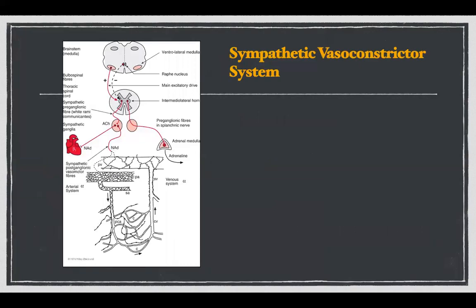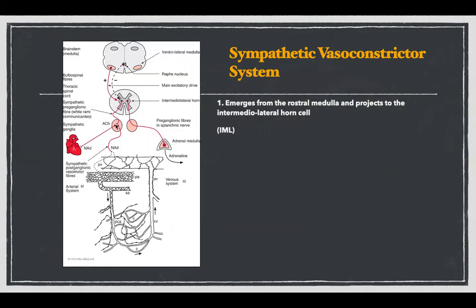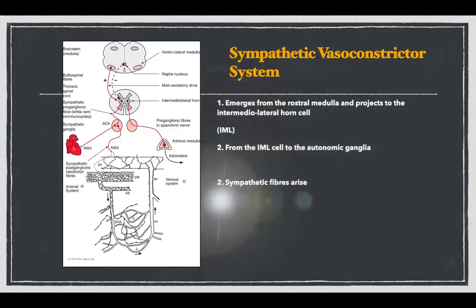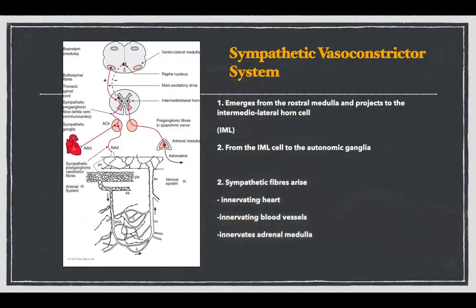The sympathetic vasoconstrictor system consists of a three neuron pathway. It emerges from the rostral medulla and projects to the intermediolateral horn cells of the spinal cord, from where the sympathetic nervous system arises. It then projects to the sympathetic ganglia, and from there the sympathetic fibers arise which project to the heart, the blood vessels, the adrenal medulla, and the sweat glands.